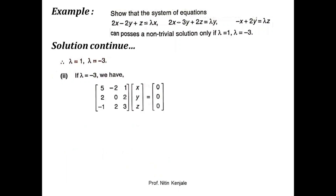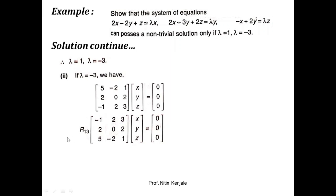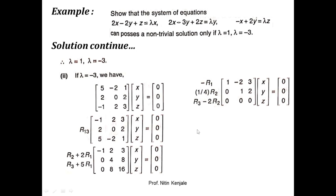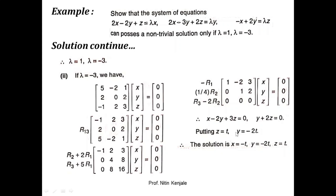Now we substitute lambda = -3 into the system, obtaining a new matrix form. To reduce it to row echelon form, we first exchange R1 with R3, then apply further row transformations. This gives two equations in three variables, so we assign one variable a random value. The equations are x - 2y + 3z = 0 and y + 2z = 0. Setting z = t, we get y = -2t, and substituting back into the first equation gives x = -t. Therefore, the solution when lambda = -3 is (-t, -2t, t).